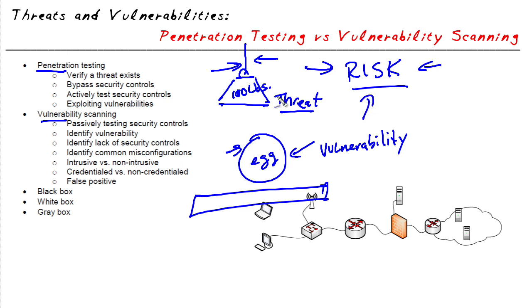Risk is the potential for a threat to compromise, take advantage of, or exploit a vulnerability, resulting in some type of a loss. What is the likelihood of that weight actually falling and destroying the egg? That's what risk is all about.